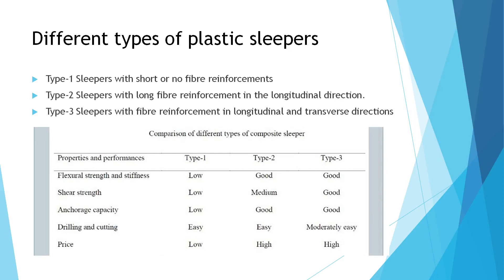Now we will know about the different types of plastic sleepers. There are three types: Type 1, Type 2, and Type 3. Type 1 is a sleeper with short or no fiber reinforcement. Type 2 is a sleeper with long reinforcement in the longitudinal direction. Type 3 is a sleeper with fiber reinforcement in both the longitudinal and transverse direction.